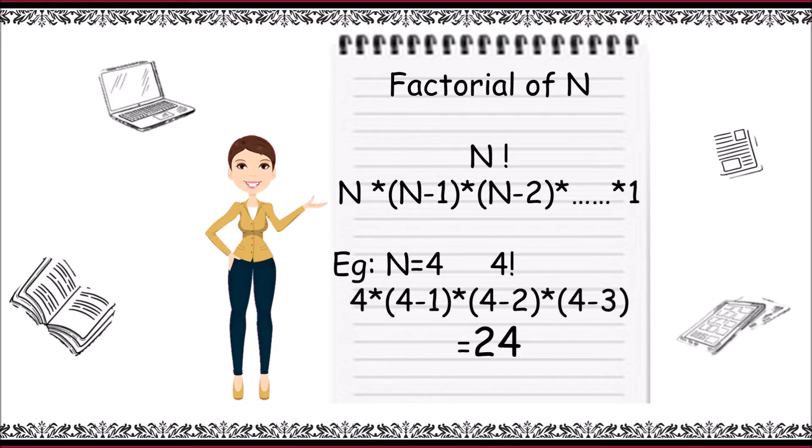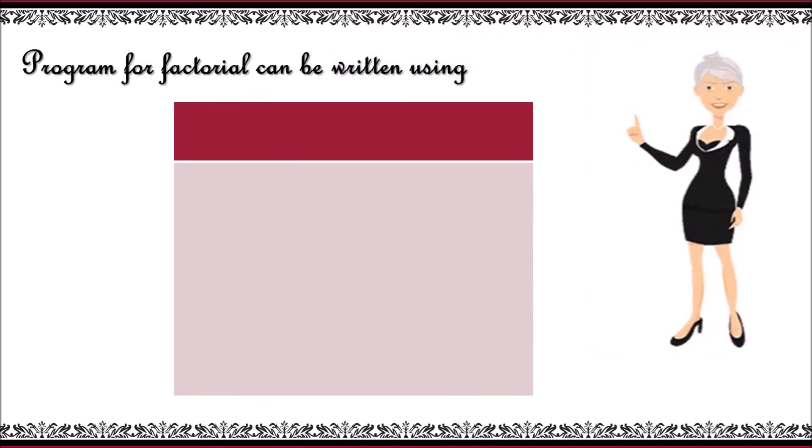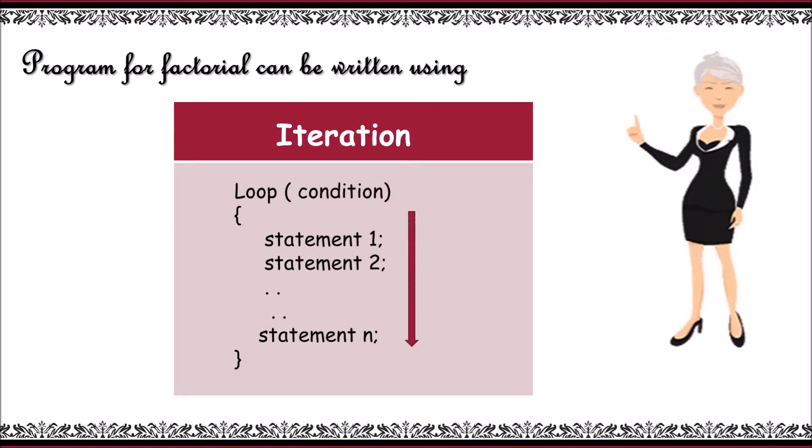For the program, I mean the program for factorial can be written using an iteration method. So what actually is iteration? Iteration is the process where a set of instructions or statements are executed repeatedly for a specified number of times or until a condition is met. It is commonly called as a loop. In C we have loops like for, while, do while.